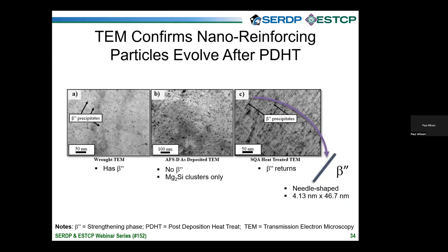Dr. Beck's graduate work explored post-deposition heat treatment to recover strength — either in the field or as a 'good enough manufacturing' approach to complete a mission while awaiting a heat-treated part. At the nanoscale via transmission electron microscopy, we see beta double prime nano-precipitates that provide mechanical strength by pinning dislocations. These are lost during deposition, forming magnesium silicate clusters, but post-deposition heat treatment recovers the beta double primes and restores strength.